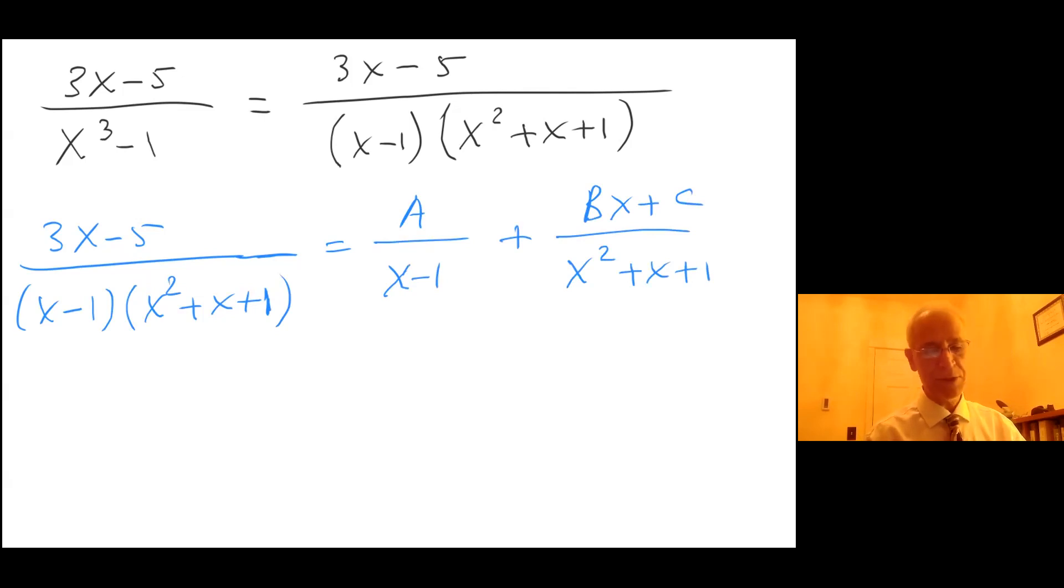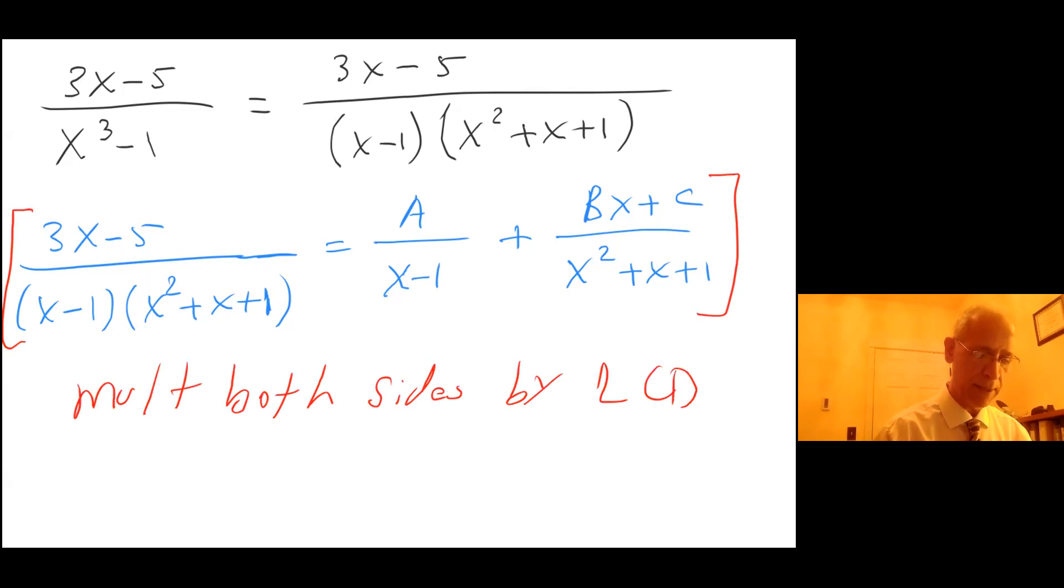How do we do that? Like before, let's multiply both sides of this equation by the least common denominator, which is right here. Let's go to the next page.